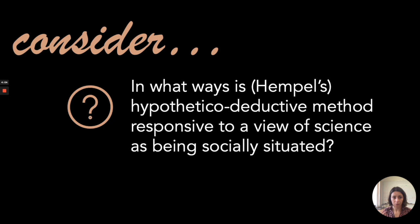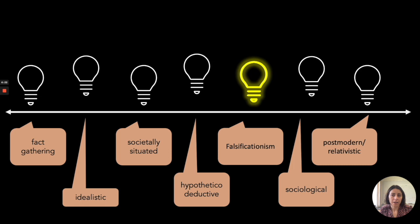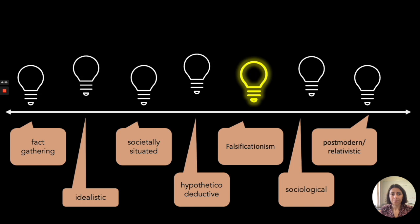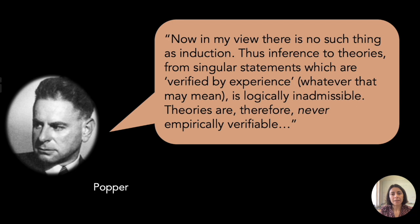The next theory is falsificationism, put forward by Karl Popper, who is concerned with this question: how do we get general claims from particular instances? If I drop a ball and it falls, then another, and another — I want to make the general claim that any object I drop will fall. That's induction: taking particular instances and making a more general claim. Popper says: 'Now in my view, there is no such thing as induction. Inferences to theories from singular statements verified by experience is logically inadmissible. Theories are therefore never empirically verified.'